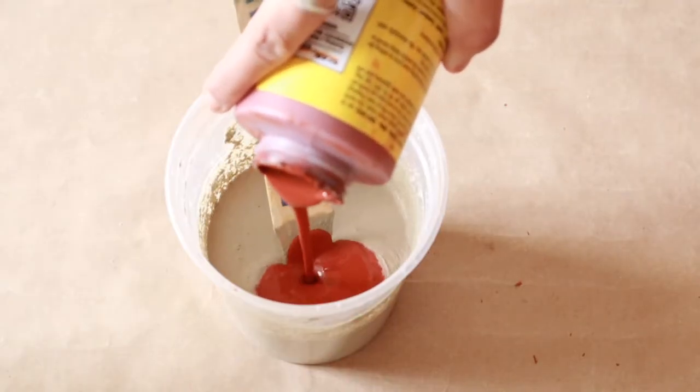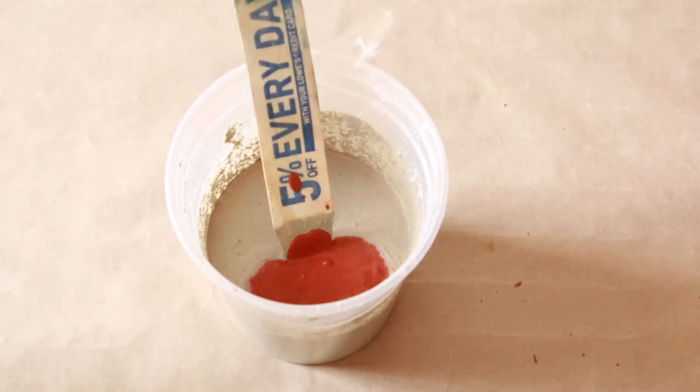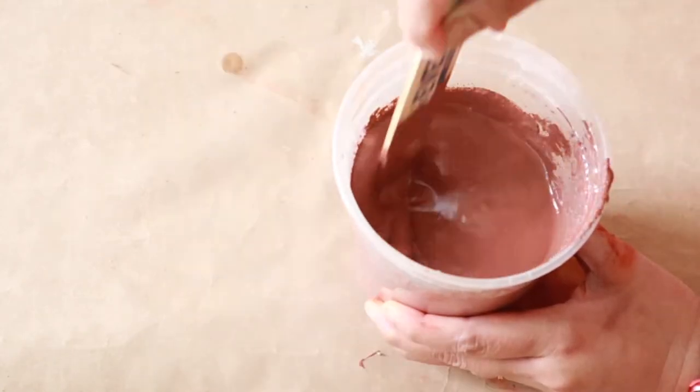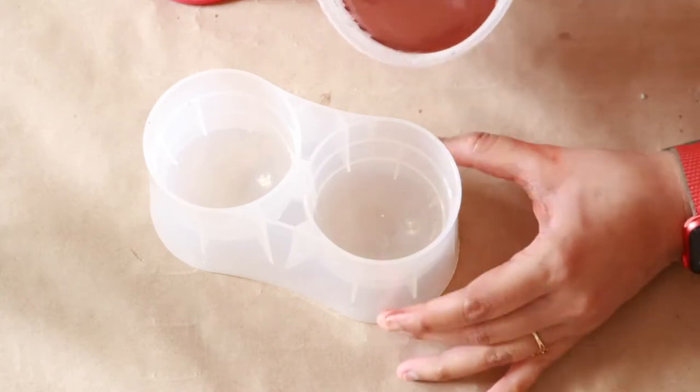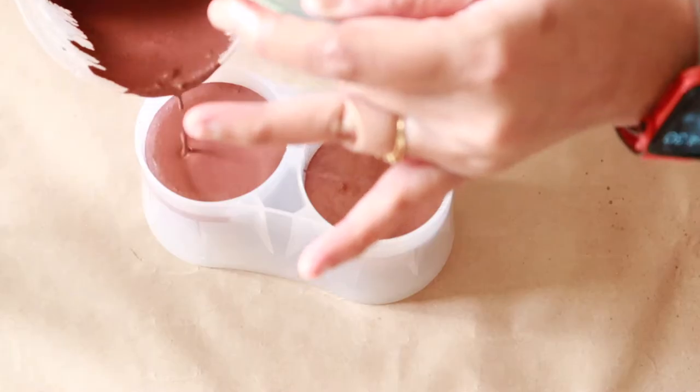I'm using rapid set cement all today. It sets very fast and it's easier to work with. I also added terracotta cement pigment. And that's it. I poured the concrete mixture in the mold and closed the lid.